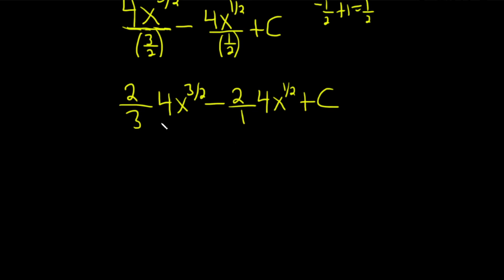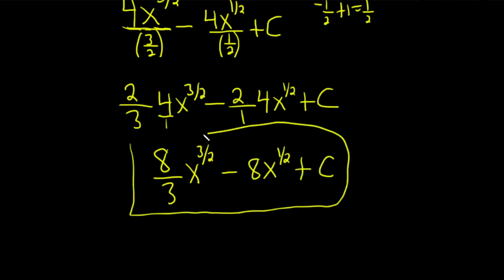Okay, now we can go ahead and clean this up. So this is really four over one. So you multiply across. Two times four is eight. Three times one is three. And then we have x three-halves. Two times four is eight. So then this is just eight x to the one-half plus our constant of integration, capital C. And so that would be the final answer in this problem.